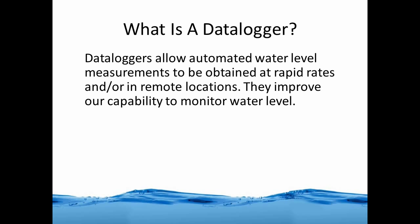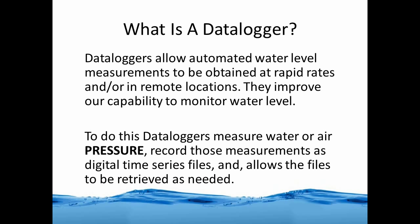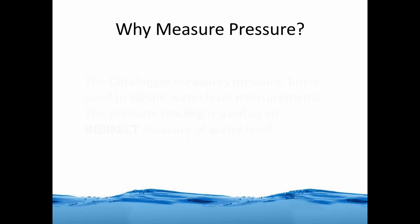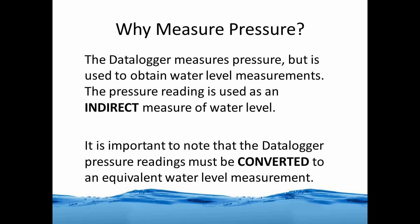To do this, data loggers measure water or air pressure and record those pressure measurements as a digital time series file, then allow these files to be retrieved as needed. Why measure pressure? The data logger measures pressure because it's used to help determine a water level measurement. The pressure reading is used as an indirect measure of water level, and it's important to note that the data logger pressure readings have to be converted to an equivalent water level measurement.